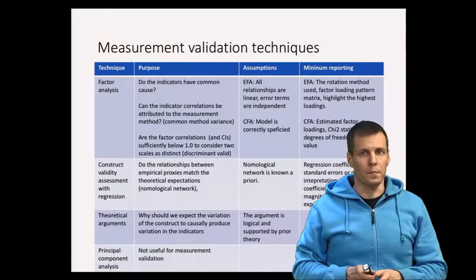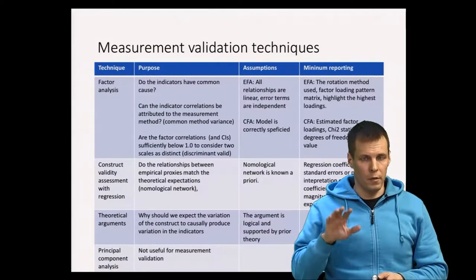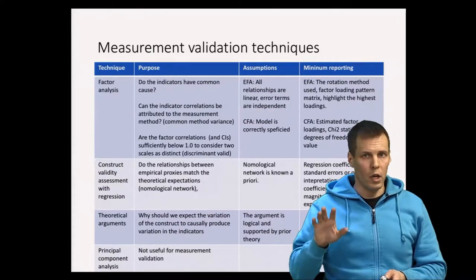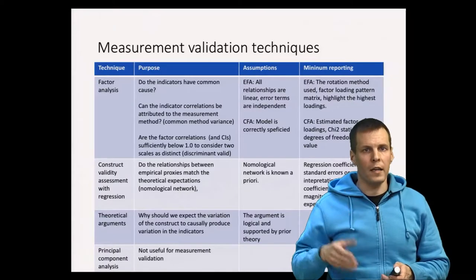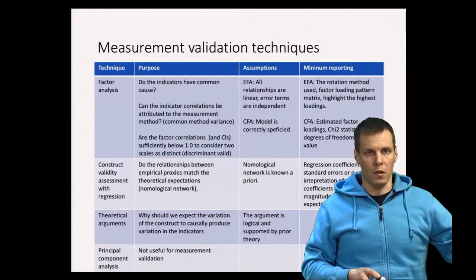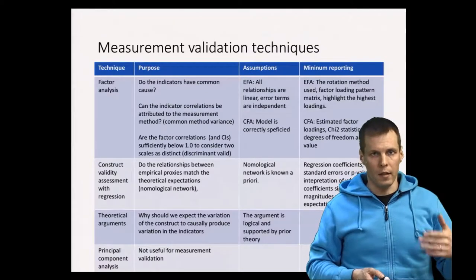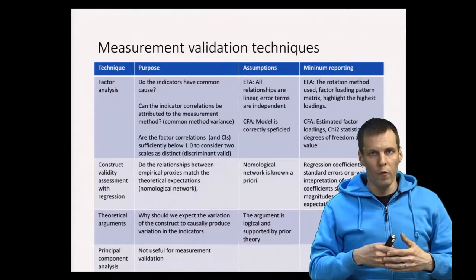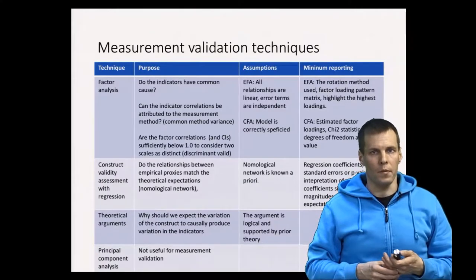For validity, measurement validation is a conceptual argument, so you cannot test validity appropriately. You can provide some evidence that supports your validity claim, but validity — whether the variance of the construct causes variation in the indicators — is ultimately a theoretical argument that you cannot prove empirically. Nevertheless, there are some techniques that are commonly applied.